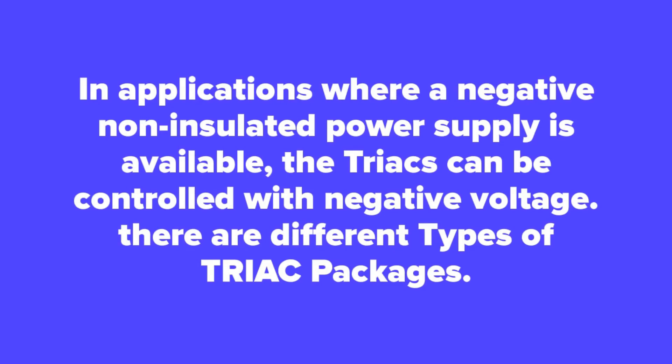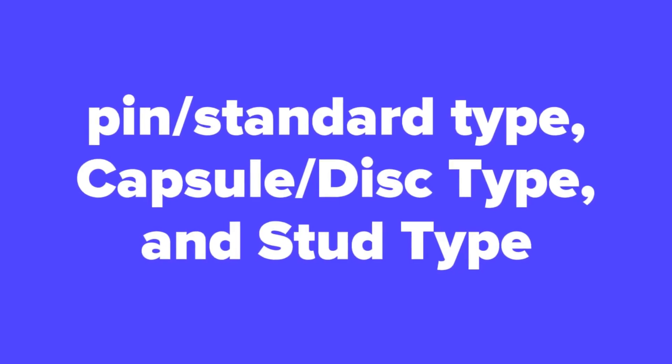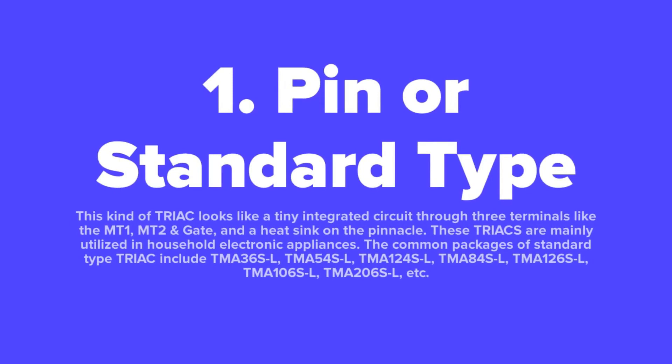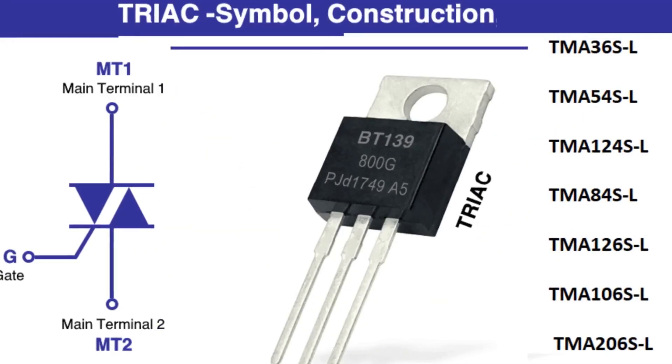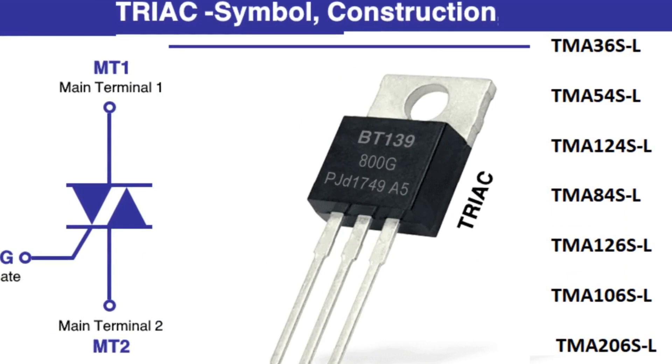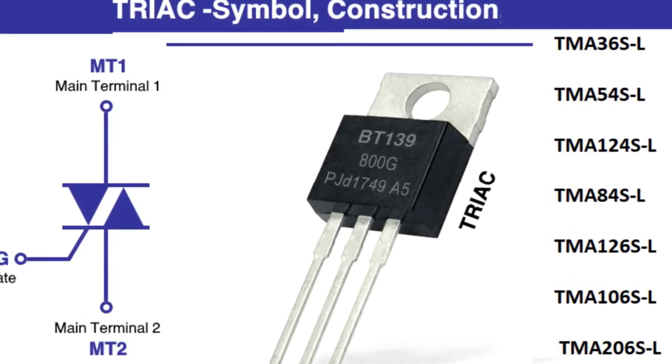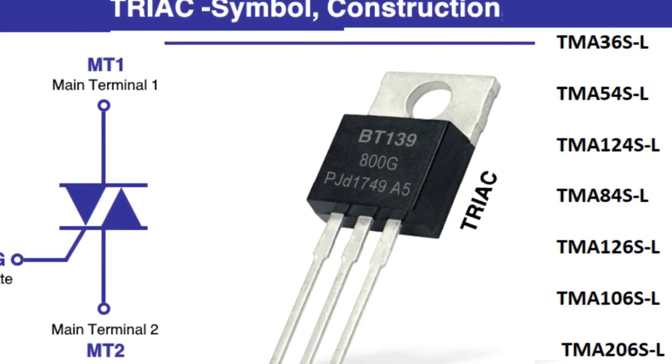There are different types of TRIAC packages. For the convenience of usage in different applications, TRIACs are designed in different packages: pin or standard type, capsule, disc type, and stud type. The pin or standard type looks like a tiny integrated circuit with three terminals — MT1, MT2, and gate — and a heatsink on the top. These TRIACs are mainly used in household electronic appliances. Common packages of the standard type include TMA-36SL, TMA-54SL, TMA-124SL, TMA-84SL, TMA-126SL, TMA-106SL, TMA-206SL, etc.